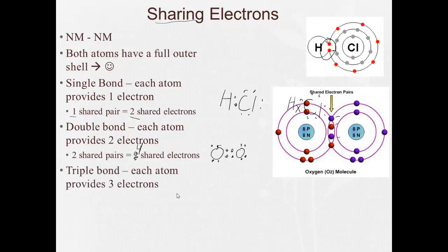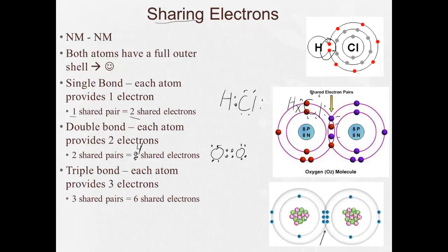Finally, a triple bond. Each atom provides three electrons. And we can see here there's three shared pairs or six shared electrons. This is nitrogen, and each nitrogen ends up with eight valence electrons.